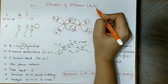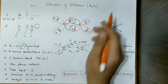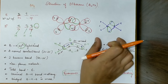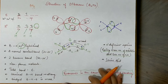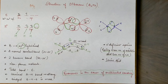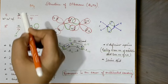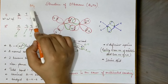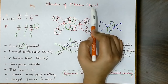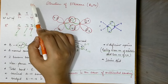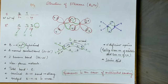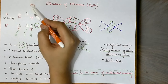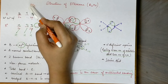But boron does not exist as BH3 — it exists as a B2H6 molecule, and the structure of B2H6 is somewhat like this. So we will now see why this happens. The first question is: why does boron's hydride exist as B2H6 rather than BH3? What is the reason behind this?